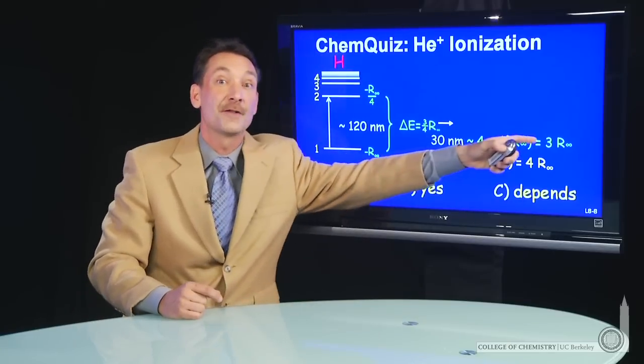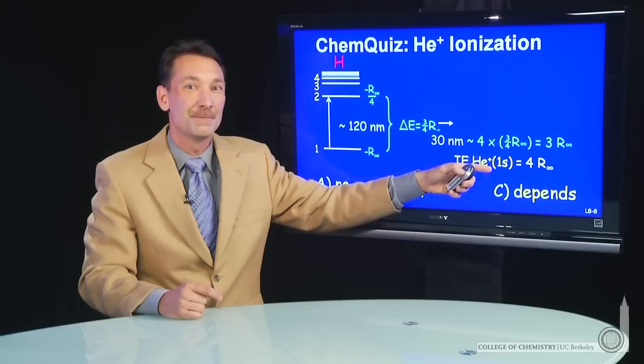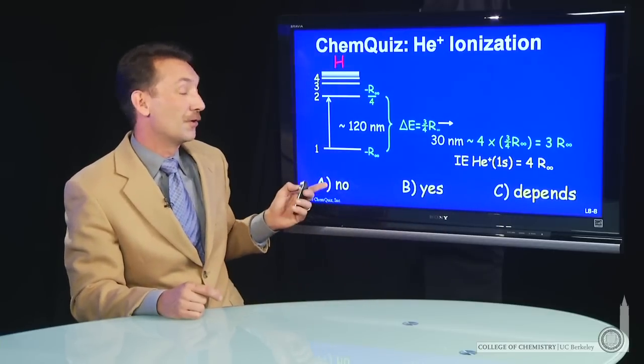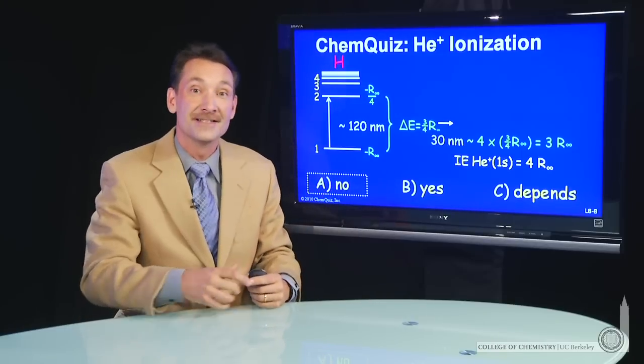So a photon with an energy of about three Rydbergs is not sufficient to ionize He plus, which requires an energy of about four Rydbergs. So not enough energy in a 30-nanometer photon to ionize helium plus.